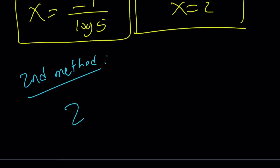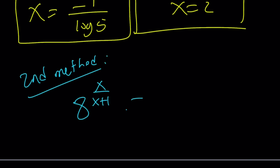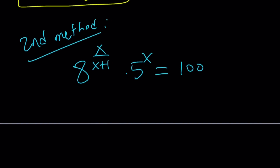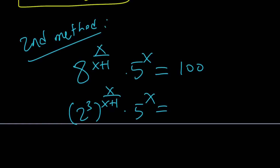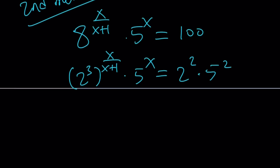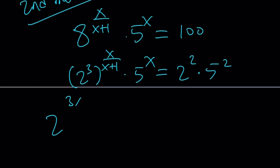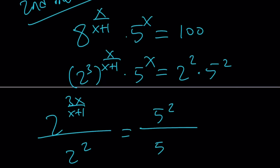We have 8 to the power x over (x plus 1), times 5 to the power x, equals 100. I'm going to write 8 as 2 to the third. 100 is 4 times 25 — 2 squared times 5 squared. Putting powers of 2 together: 2 to the power 3x over (x plus 1), divided by 2 squared, equals 5 squared divided by 5 to the x.